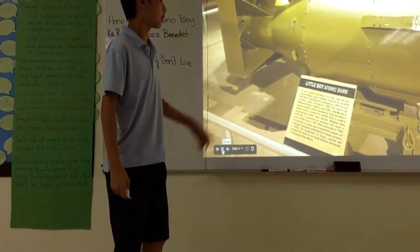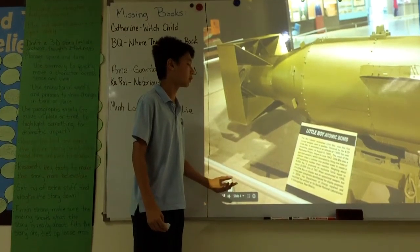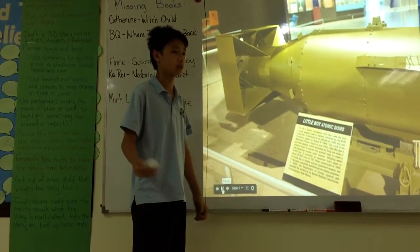The book is about this atomic bomb named Little Boy, and it was the bomb that they used to bomb Hiroshima or Ninosaki.